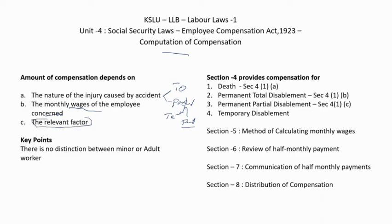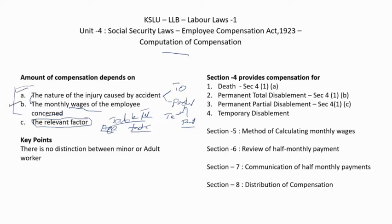The third factor is the relevant factor — an important term we have not heard so far. The relevant factor is a table published in Schedule 4 of the Employee Compensation Act. It lists the age of the employee at the time of death and a corresponding multiplication factor. The final compensation is obtained after multiplying the calculated amount by the relevant factor from Schedule 4, which has two columns: age at the time of accident and the corresponding relevant factor.